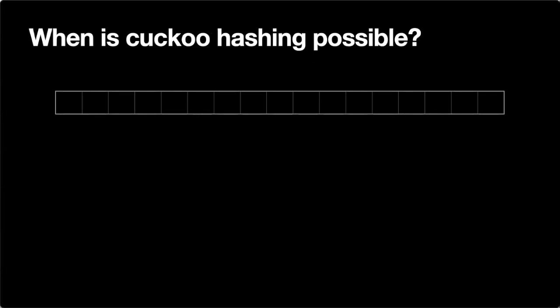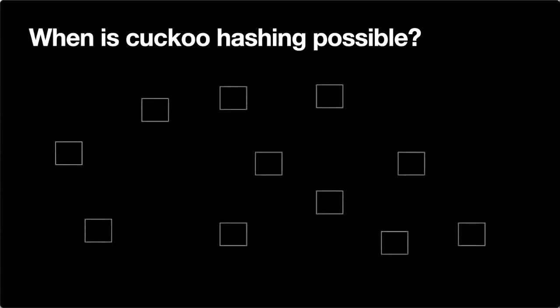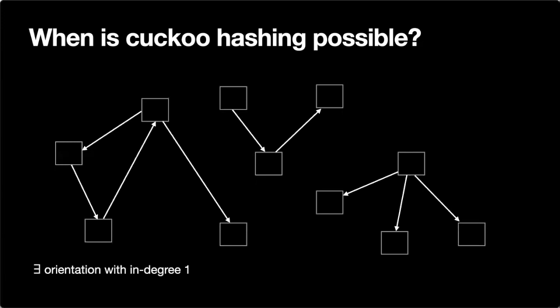Let's discuss when this is even possible. I'll break up the array and think about its entries as nodes in a graph. Each key we insert has two possible positions given by the two hash values, and we can think of the choice of where to store the key as an orientation on this edge — in this case the upper memory location is chosen. So a state of cuckoo hashing can be represented as a bunch of oriented edges.